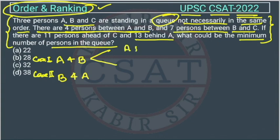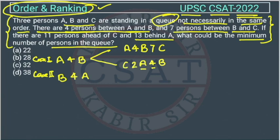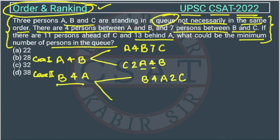From each case, we get two more possibilities using the second condition: seven persons between B and C. In Case 1 (A, four, B), C can be on the right of B giving A–4–B–7–C, or on the left giving C–7–(overlap)–A–4–B. In Case 2 (B, four, A), C can be on the right giving B–4–A–(gap)–C with 7 between B and C, or on the left giving C–7–B–4–A.